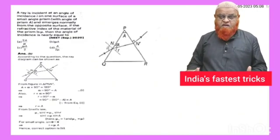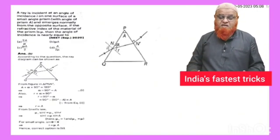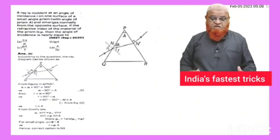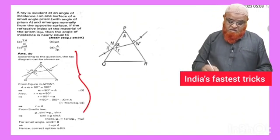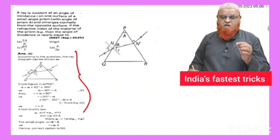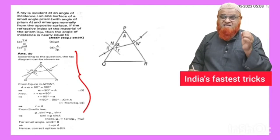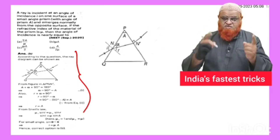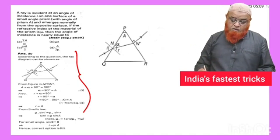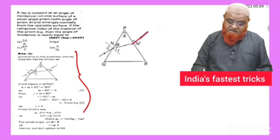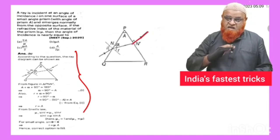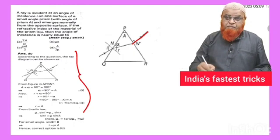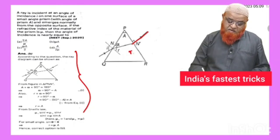Today we will discuss a very important and easy topic: the prism. You can see the lengthy method given in textbooks. We can solve this problem with a simple trick. As the light ray is entering normally to the surface PR, we can label the angles R1 and R2.